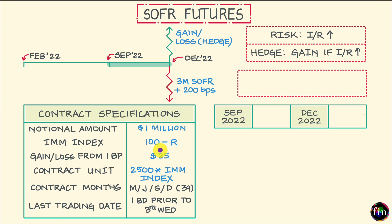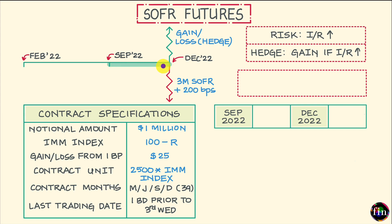It's simple to rationalize this number: a 0.01 change in R — which is in percentage points — divided by 100 to account for R being in percentage points, times $1 million notional, times 0.25, which is the length or duration of this period expressed in years. That calculation gives you $25.